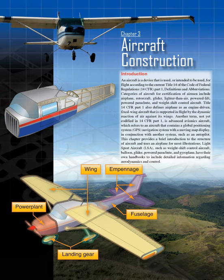Chapter 3 Aircraft Construction Introduction. An aircraft is a device that is used, or intended to be used, for flight according to the current Title 14 of the Code of Federal Regulations, 14 CFR, Part 1, definitions and abbreviations.